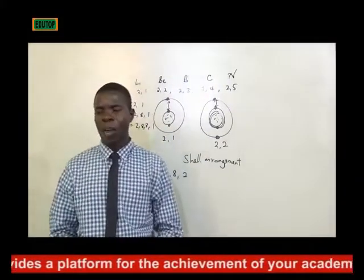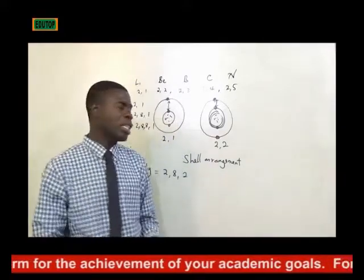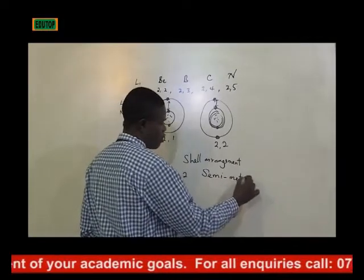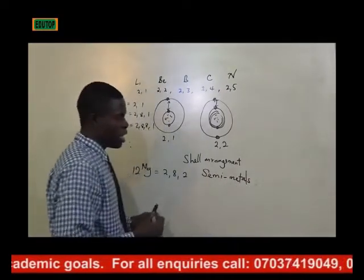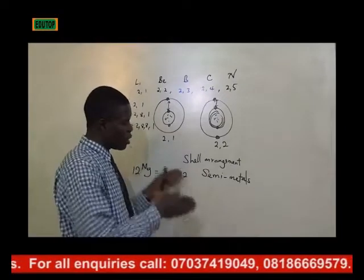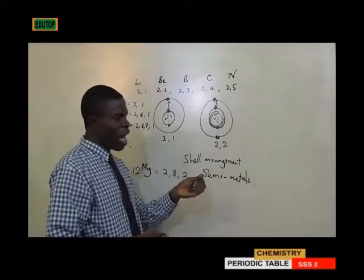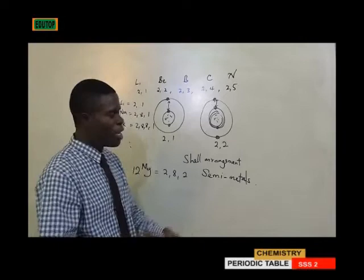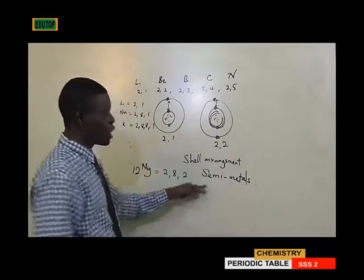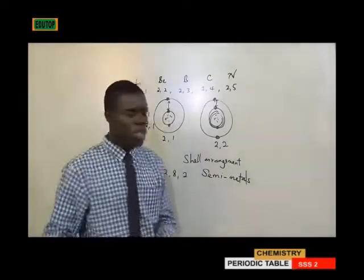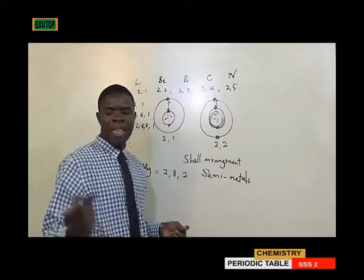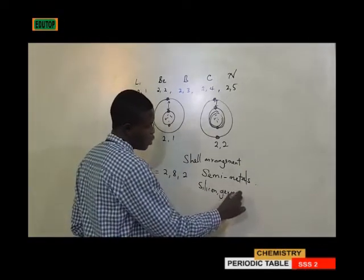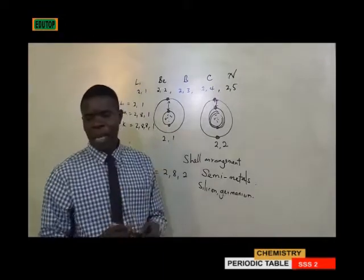Question 4: What is another name for metalloids and give two examples? Another name for metalloids is semi-metals, because they sit between the dividing line of metals and non-metals on the periodic table. They have partial characteristics of both metals and non-metals, which is why they are called metalloids or semi-metals.